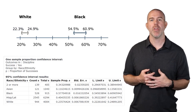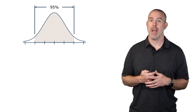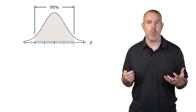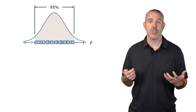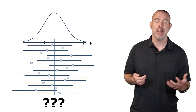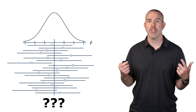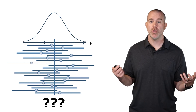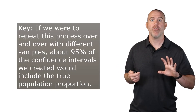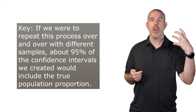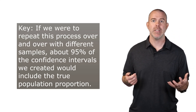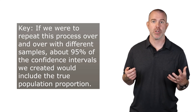The StatCrunch output shows: for black students, 54.5% to 60.9%; for white students, 22.3% to 24.9% — slightly different from our hand calculation due to using 1.96 instead of 2. We still don't know whether our specific confidence intervals include the true population proportion, but if we repeat this process over and over, 95% of confidence intervals created this way will include the true population proportion.